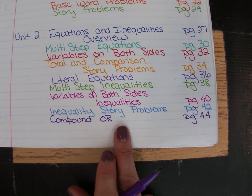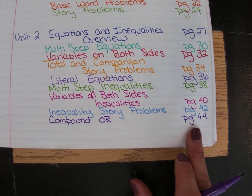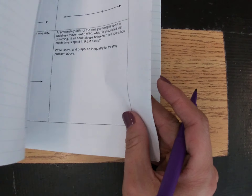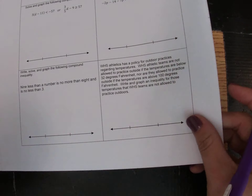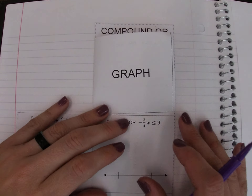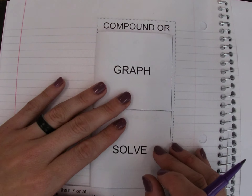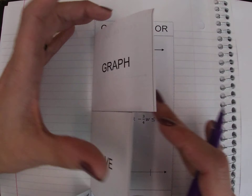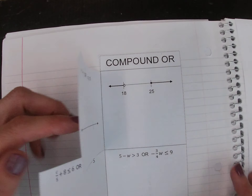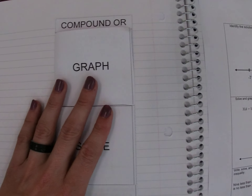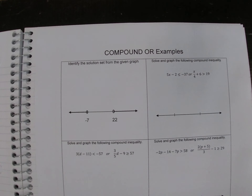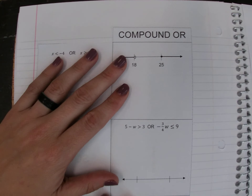Today we are going to be adding compound inequalities — that's going to be on page 44. We have two pieces to put in here: a table on the left-hand side, which you need to cut out along the dash lines, and your example page on the right. Pause if you need time to get those put into your notebooks.